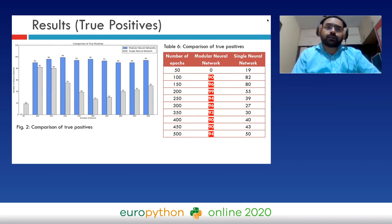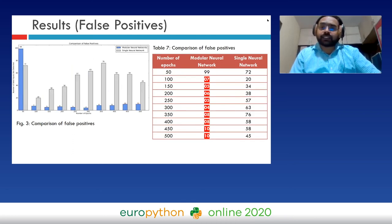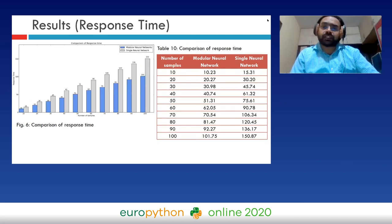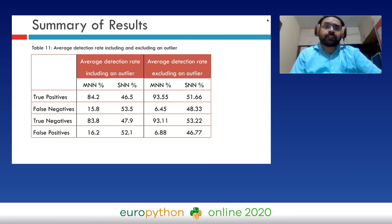Our results show that in terms of true positives, modular neural networks yield more stable results compared to single neural networks, which are unstable. Similarly for false negatives, true negatives, and false positives, results are consistently better with modular neural networks. In terms of response time, modular neural networks are faster — the ratio is 1:1.5 compared to single neural networks. Summarizing, both including and excluding outliers, modular neural network results are better in all cases.